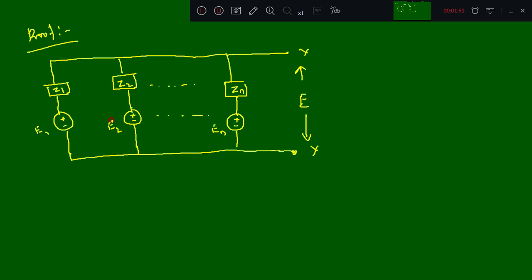Here E1, E2 until En and their internal resistance Z1, Z2 and Zn all are connected in parallel. First let me make this section as the ground node and I will take one node as E. The potential at that node, let it be E.